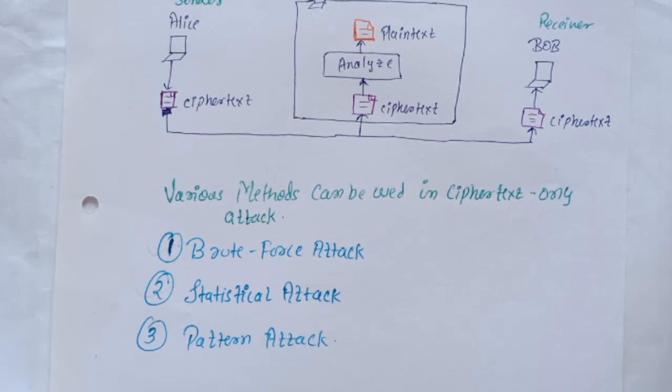After finding a few pairs, the analyst can find the key and use it to decrypt the message. To prevent this type of attack, the cipher should hide all the characteristics of the language.